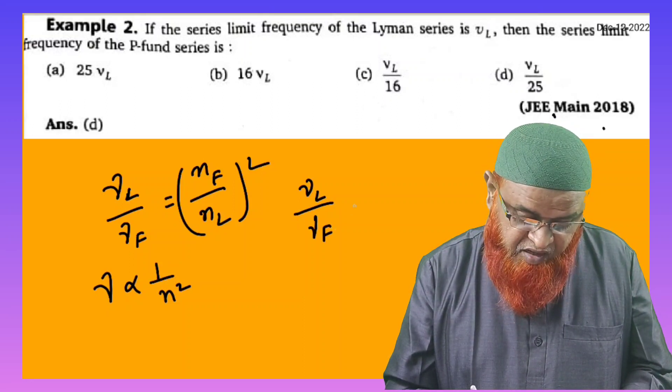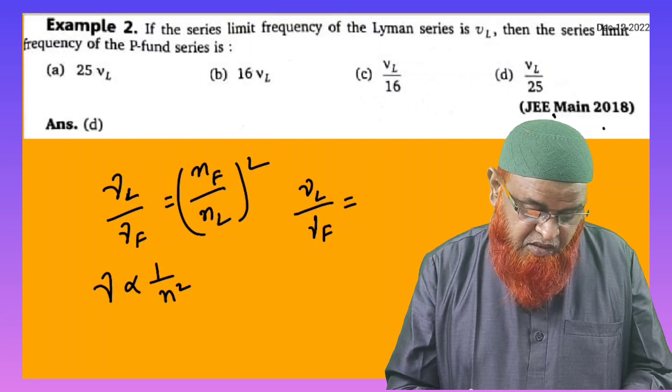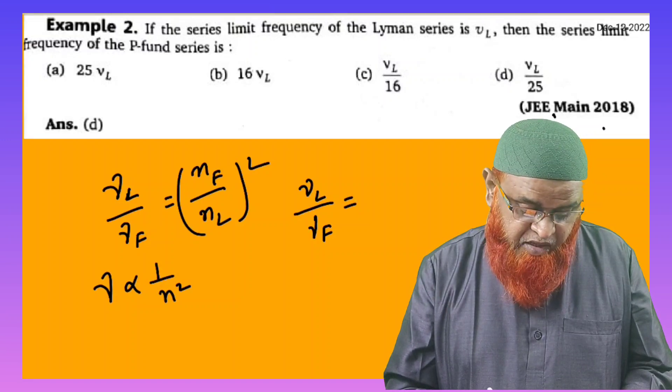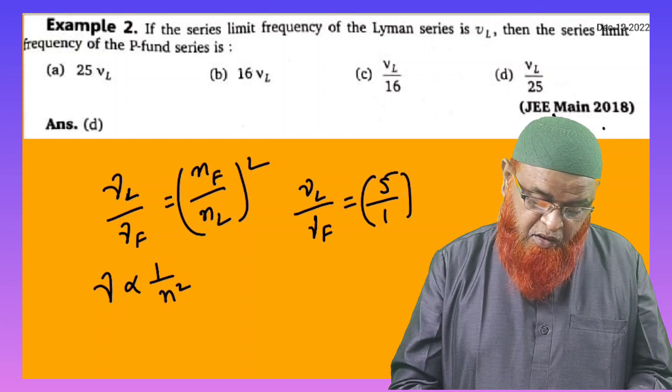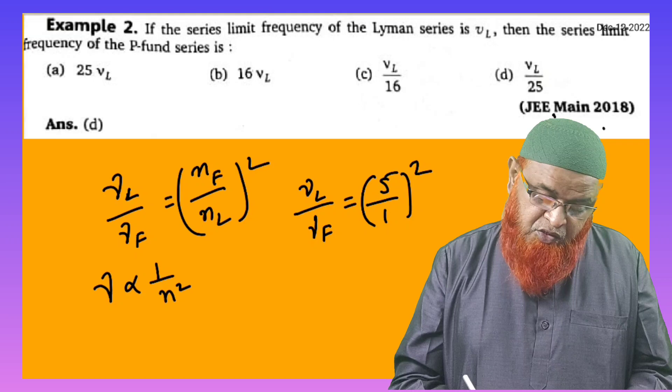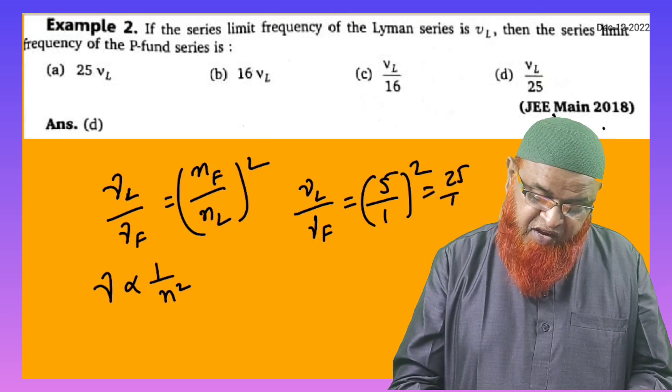This is equal to, frequency of Pfund series is nothing but 5, and whereas the Lyman series is taken as 1 here, whole square. You can write, so therefore it can be written as 25 by 1 here.